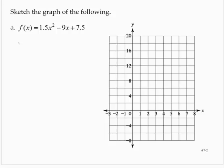Sketch the graph of f(x) = 1.5x² - 9x + 7.5. We're going to follow the same basic process as we did when the function was in vertex form, just using slightly different techniques. First thing we do is answer: does it open up or down? This parabola opens up since a is positive.